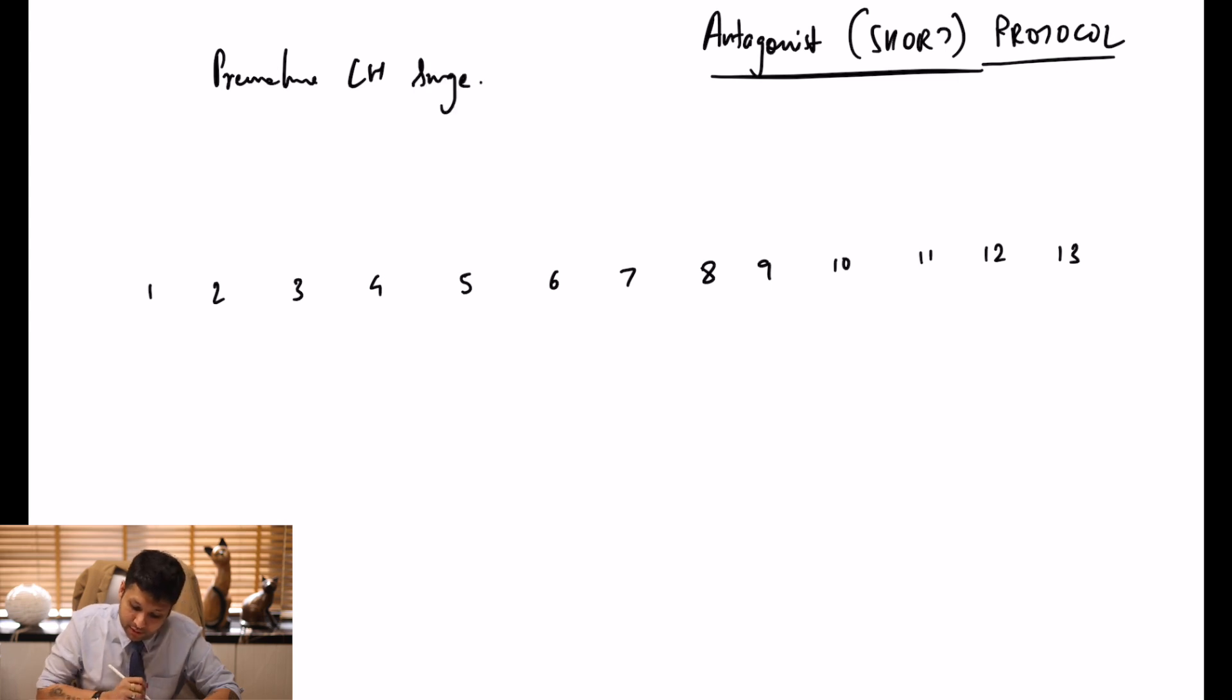We've all studied this, right? In the previous episode we discussed the agonist. What does the agonist do? Agonist causes down regulation of the receptors, but what does antagonist do?